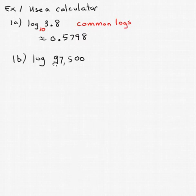Alright, in the old days when we used tables, 97,500 wasn't there. We'd have to convert it to scientific notation. But with the advent of our calculator, we're either going to type the number first and then the LOG button, or the LOG button and then our number, and we get approximately 4.9890.